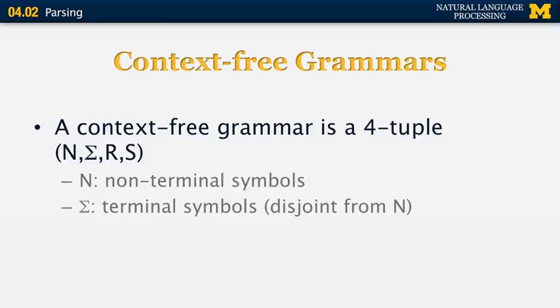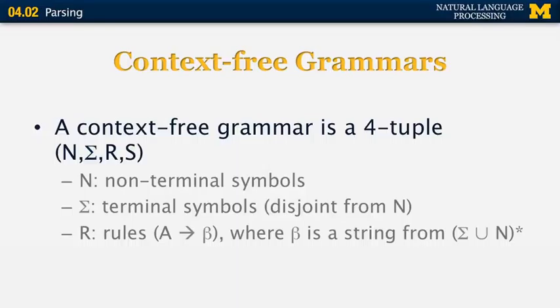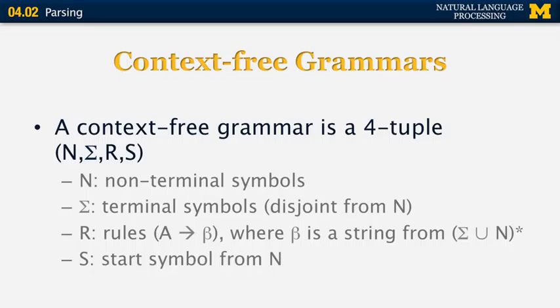There is also a set of rules R where, on the left-hand side, you have a non-terminal symbol A from the set of non-terminal symbols, and on the right-hand side you have beta, where beta is a string that can combine any symbols from sigma and N. Finally, S is a specific designated start symbol in N. When we parse entire sentences, S happens to be the sentence symbol, but a context-free grammar can also parse other syntactic constituents such as noun phrases or even entire paragraphs.